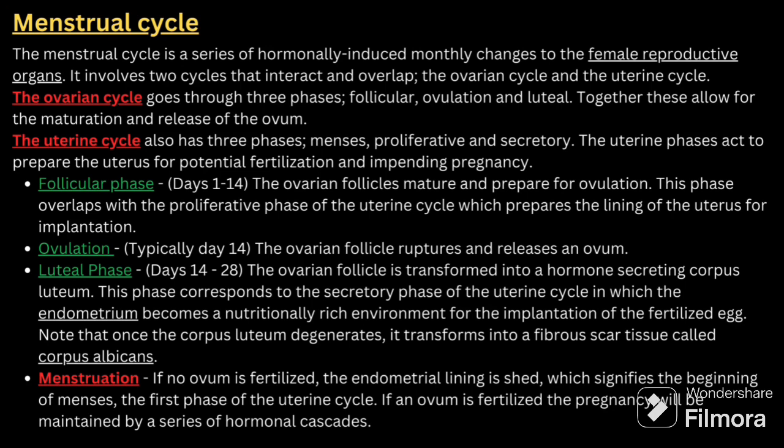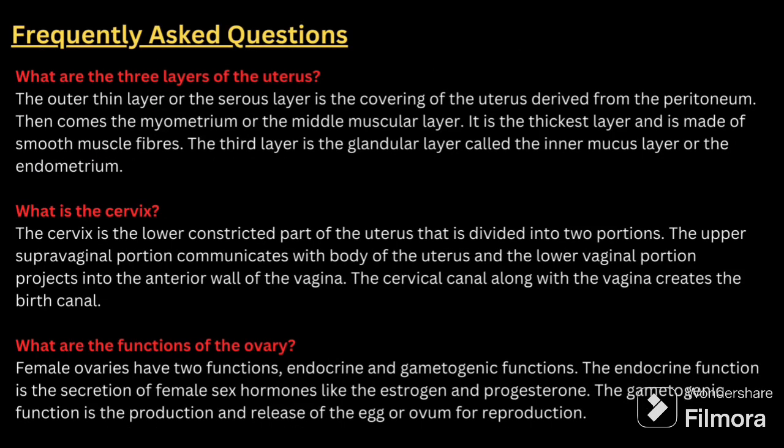Next is the menstrual cycle. The menstrual cycle is a series of hormone-induced monthly changes in the female reproductive organs. It involves two cycles: the ovarian cycle and the uterine cycle. The ovarian cycle goes through three phases: follicular, ovulation, and luteal — together allowing the maturation and release of the ovum. The uterine cycle also has three phases: menses, proliferative, and secretory.